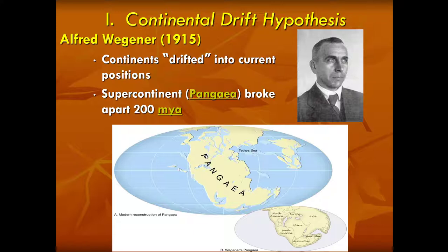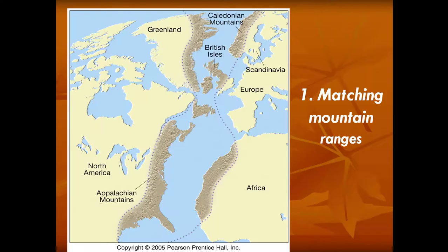Any good scientist, when they come up with a new idea, has to have evidence to support that idea. The Continental Drift Hypothesis in 1915 was a pretty revolutionary idea. Wegener went to a meeting, described his hypothesis, and then described four lines of evidence that he thought conclusively supported that he was correct. The first thing he pointed out was that there are matching mountain ranges on either side of the Atlantic Ocean.